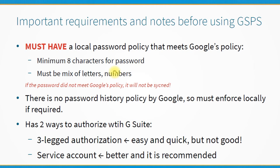When configuring the GSPS tool there are two ways to authorize it with the G Suite admin console. The first is called three-legged OAuth — you sign in, accept the permissions, get a code, and enter it in the tool's authorization step. This is easy and quick but not ideal, because at some point the authorization will expire, the tool will stop working, and you'll have to re-launch the setup and re-authorize it.